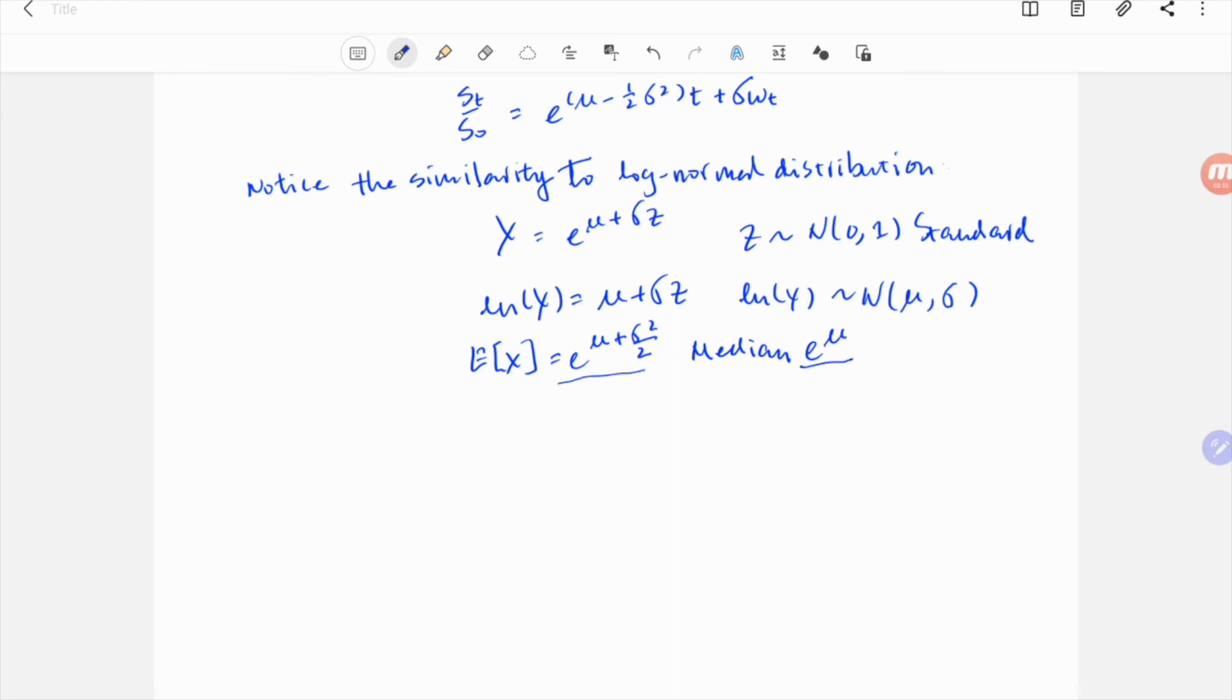Note the mean of x is exponential mu plus half sigma squared. It's different from the median, e to the mu. This is because log normal distribution has an asymmetric pdf. Unlike the normal distribution, which is symmetric and can be either positive or negative, x can only be positive.